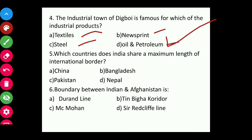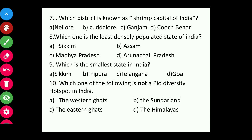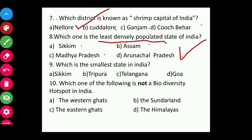Quiz continued: With which country does India share the maximum length of international border? Answer: Bangladesh. Boundary between India and Afghanistan? Durand Line. Which district is the shrimp capital of India? Nellore. Least densely populated state? Arunachal Pradesh. Smallest state? Goa. Which is not a biodiversity hotspot? Eastern Ghats.